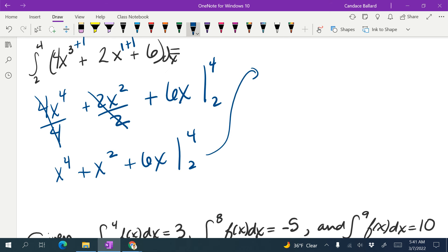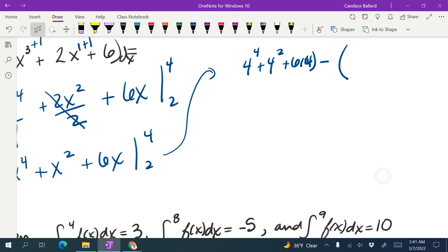We're going to go ahead and plug in those numbers. So we have 4 to the 4th plus 4 squared plus 6 times 4. Then I'm going to do minus and a big parenthesis, and then I'm going to do 2 to the 4th plus 2 squared plus 6 times 2.